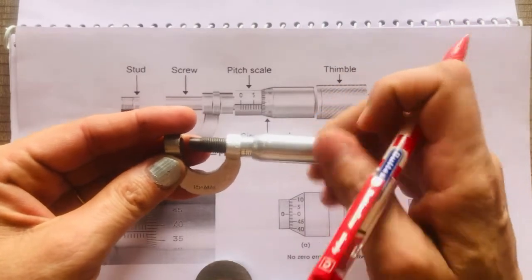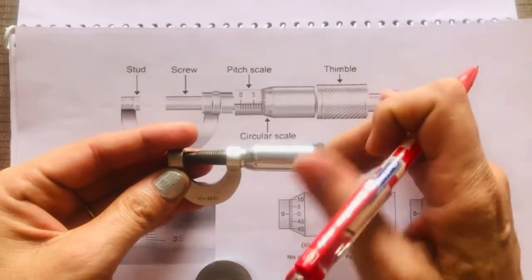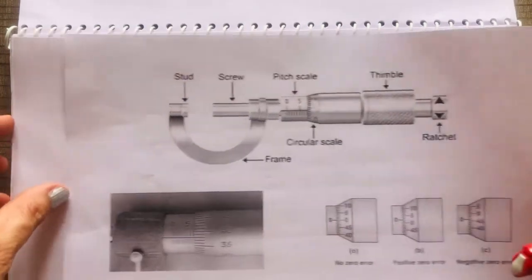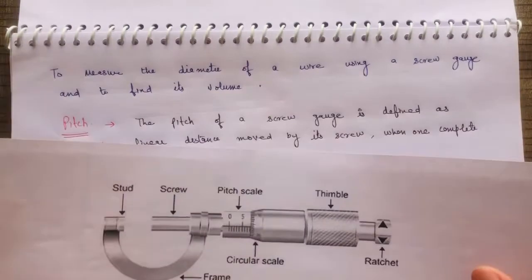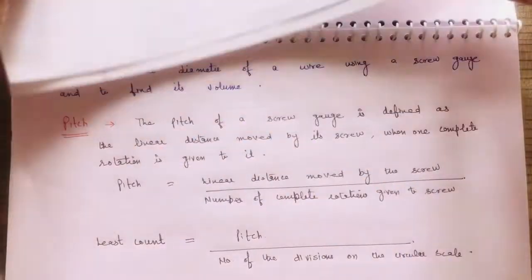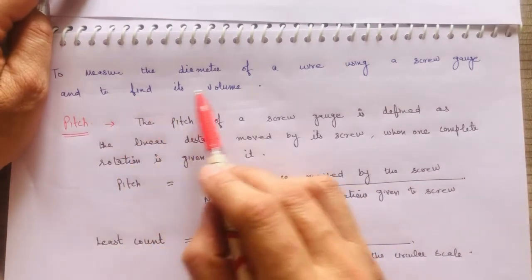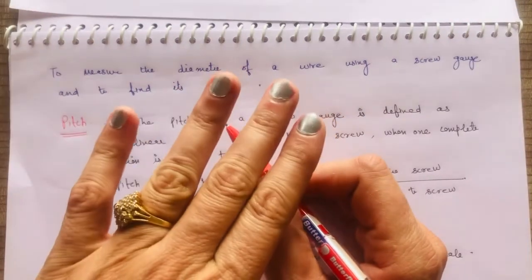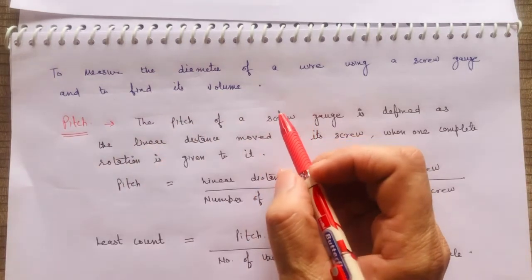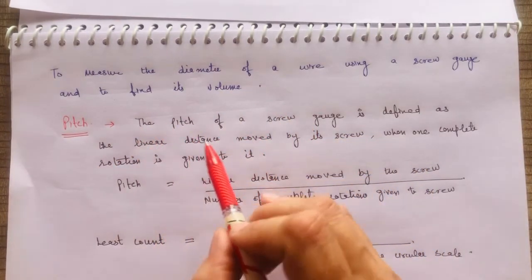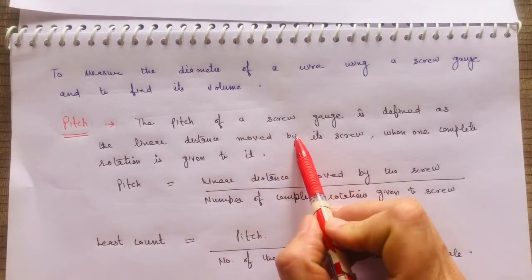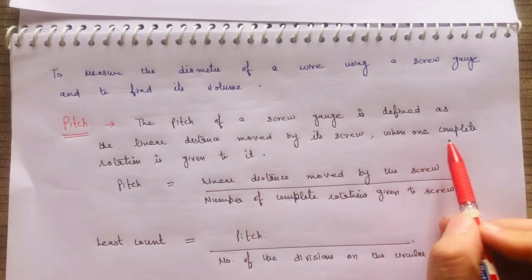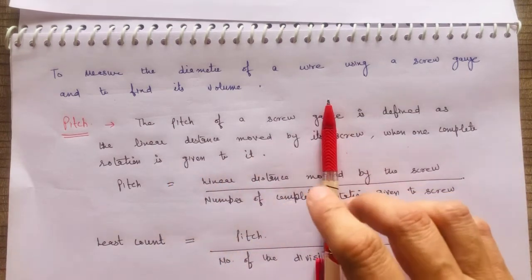This covers the construction and principle of the screw gauge. Now we have to see what is the pitch and least count — that is very important. The first experiment we have to do is to measure the diameter of a wire using a screw gauge and find its volume. First, pitch: the pitch of a screw gauge is defined as the linear distance moved by its screw when one complete rotation is given to it.